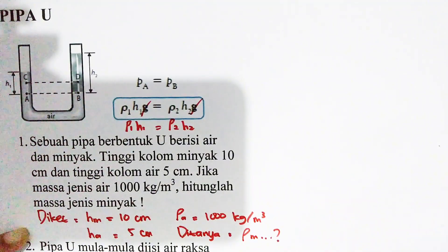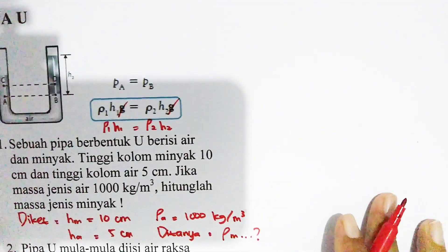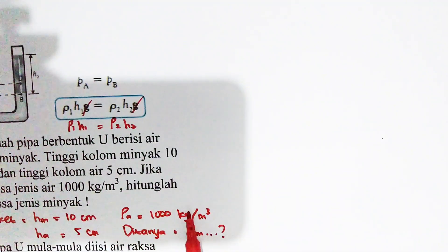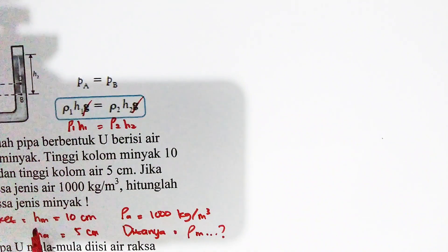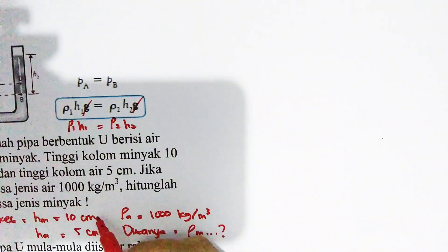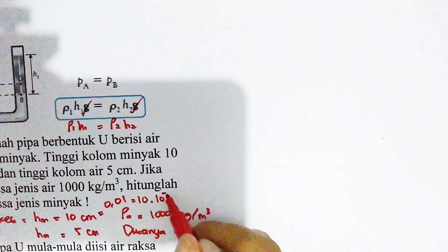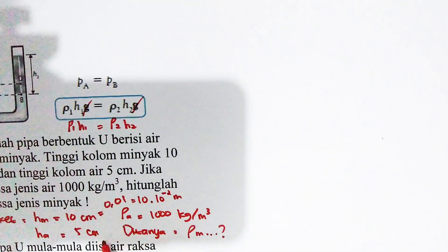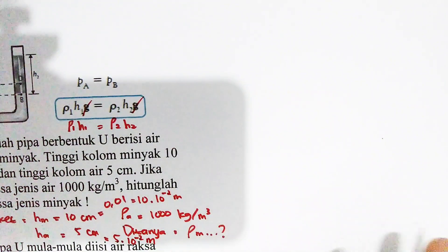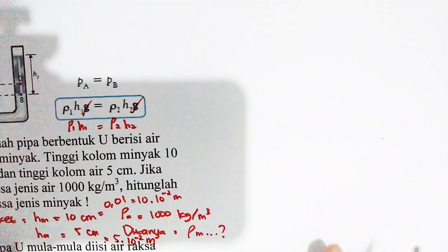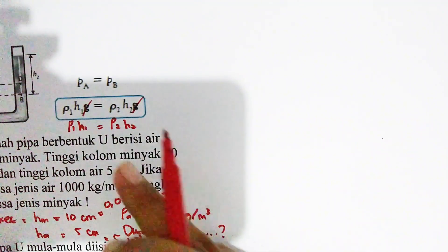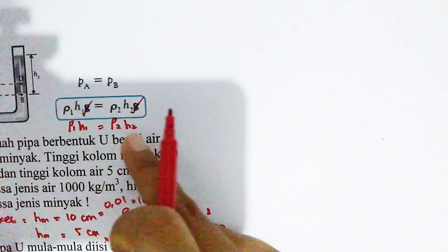Cukup jelas dari diketahui dan ditanya. Kita lihat dulu ρ_A air — satuannya kg per meter pangkat 3. Maka mau tidak mau, tinggi dari minyak dan tinggi dari kolom airnya kita ubah dulu ke meter. Tinggal kita bagi 100: 10 cm menjadi 10 × 10⁻² meter, dan 5 cm menjadi 5 × 10⁻² meter. Jadi cm ke meter naik 2, tinggal kita kalikan 10 pangkat negatif 2. Kita pisahkan minyak dan air.